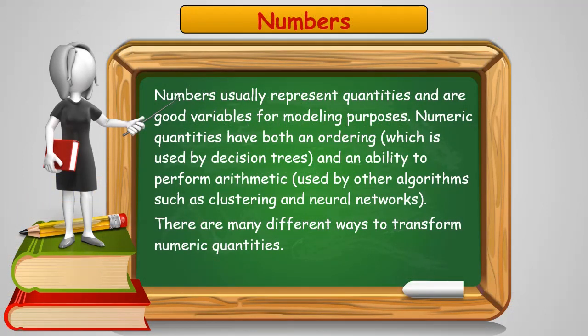Numbers usually represent quantities and are excellent for data modeling purposes when building predictive models. Numeric quantities have an ordering which is used by decision trees, and the ability to perform arithmetic which is used by algorithms such as clustering and neural networks. There are many ways to transform numeric quantities to make them even better.